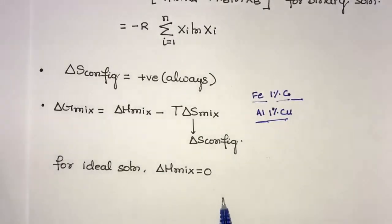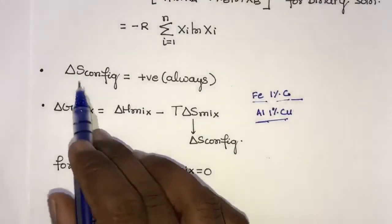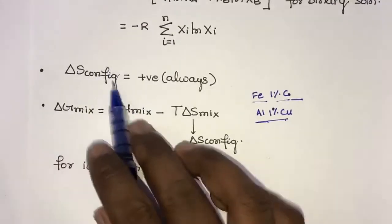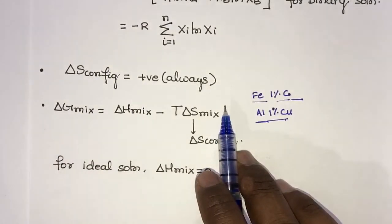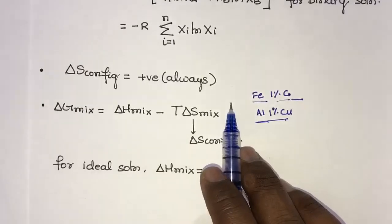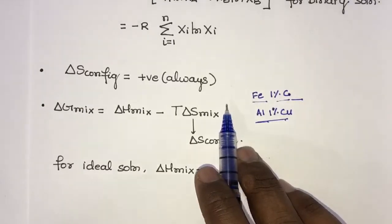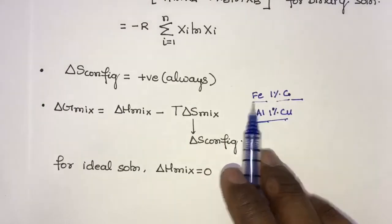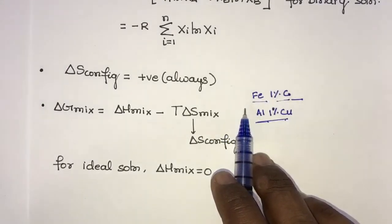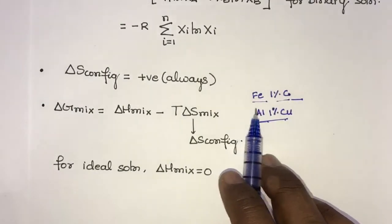ΔS_configurational for a perfect crystal will be very, very low. If it is fully perfect, then it will be equal to zero. However, it is not possible to have a fully perfect crystal, because even in an ordered material there should be some disorder inside it, and that is called a partially ordered material.